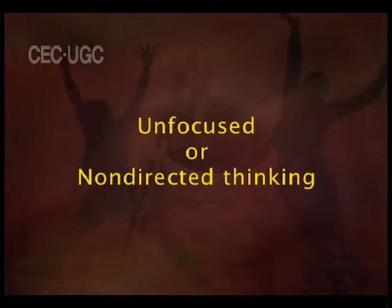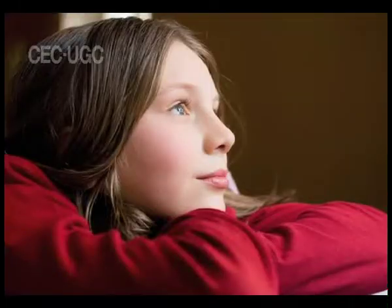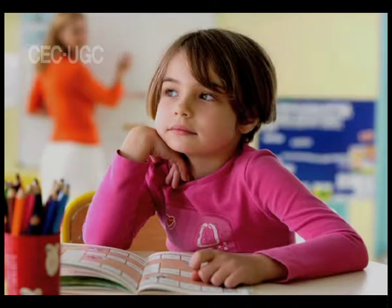Another type is unfocused or non-directed thinking, which does not have any goal. It can start and stop at any time without any aim or direction. For example, sitting and daydreaming, or getting bored in a lecture and thinking about what to eat, what movie to watch, or whom to meet. These kinds of erratic thoughts that do not have any direction and are not likely to be used in the future are called unfocused or non-directed thinking.